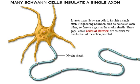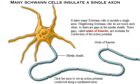Because Schwann cells are small compared to the length of an axon, it takes many of them to insulate a single axon. Neighboring Schwann cells do not touch each other, so there are gaps in the myelin sheath where the axon membrane is exposed to the extracellular space. These gaps, called the nodes of Ranvier, are essential for conduction of the action potential. We'll learn about this type of conduction in the action potential section of this module. Click the axon to see an action potential conducted along a myelinated axon.